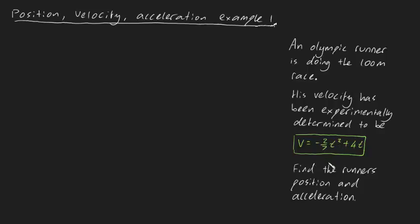Now we've been asked, find the runner's position and acceleration at any time t. So in case you're a little bit confused about what's going on here, let's actually draw this scenario.